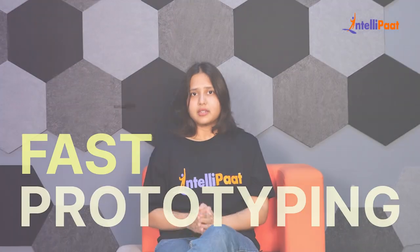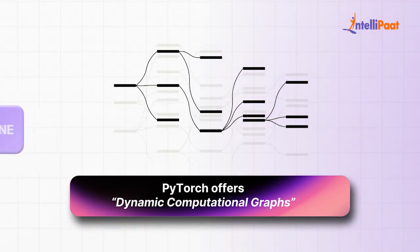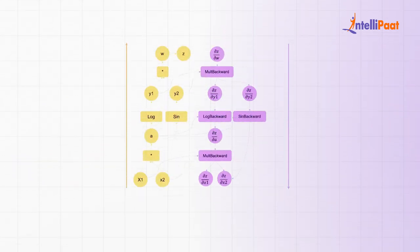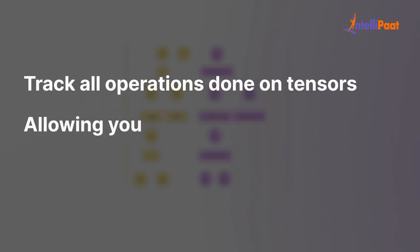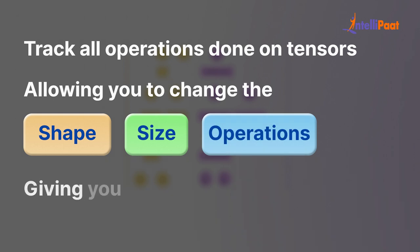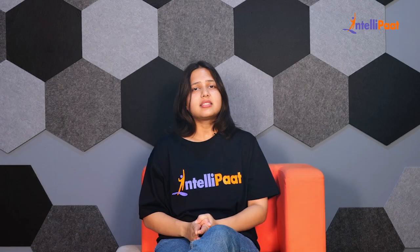PyTorch allows fast prototyping by offering dynamic computational graphs, which let developers define and modify models during runtime itself. It works by creating a graph of functions that track all operations done on tensors, allowing you to change the shape, size, and operations after every iteration — giving you complete control over performance and fine-tuning. That's why cutting-edge AI products requiring high accuracy, such as Tesla's Autopilot mode, have been built using this framework.